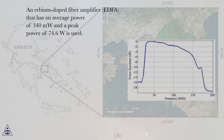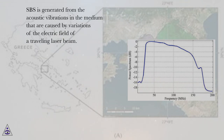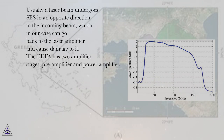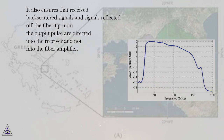An Erbium-doped fiber amplifier (EDFA) with an average power of 340 mW and a peak power of 74.6 W is used. This peak value cannot be increased beyond 74.6 W because of stimulated Brillouin scattering (SBS), which can take place when an intense laser beam travels through a medium such as an optical fiber. SBS is generated from acoustic vibrations in the medium caused by variations of the electric field of a traveling laser beam, and typically propagates in the opposite direction, which can damage the laser amplifier. The EDFA has two amplifier stages — preamplifier and power amplifier — with output power adjusted in current control mode. The optical circulator ensures the amplified output laser pulse is transmitted into the optical antenna and not into the detector, and also directs received backscattered signals into the receiver rather than back into the fiber amplifier.